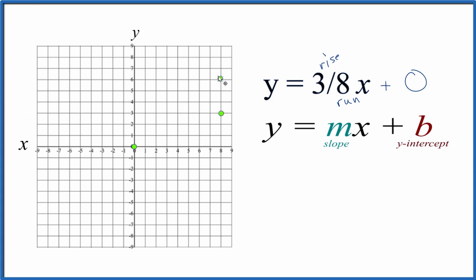From here, we could do the same, up three and over eight, but that's way over here. So let's go down three, one, two, three, and then to the left, the opposite direction, one, two, three, four, five, six, seven, eight. And there it is. That's our line.